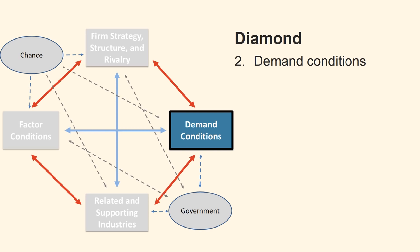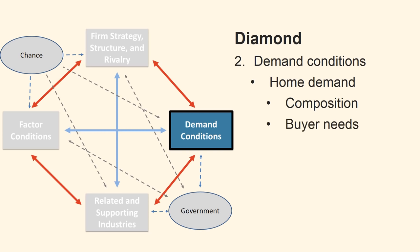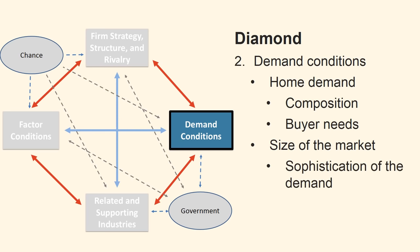The second broad determinant of national competitive advantage is Demand Conditions. The main factor is home demand conditions which have influence in nearly every industry. The composition of home demand shapes how firms perceive, interpret and respond to buyer needs. Nations gain competitive advantage in industries where the home demand gives local firms a clearer or earlier picture of buyer needs than foreign rivals can have. It is not merely the size of the market that is important, but the intensity and sophistication of the demand that is significant for competitive advantage. If consumers are sophisticated, they will make demands for sophisticated products and that, in turn, will help the production of sophisticated products. Gradually, the country will achieve competitive advantage in such production.